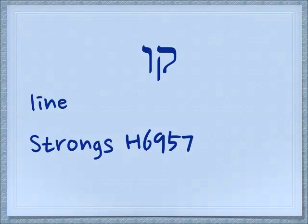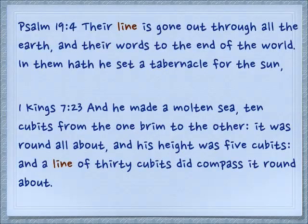Together the kuf and the vav make the word 'kav,' and this means a line. We see this in Psalm 19:4 — 'Their line is gone out through all the earth, and their words to the end of the world. In them hath he set a tabernacle for the sun.'